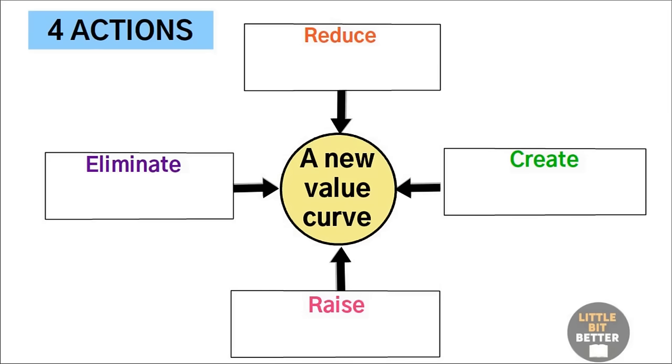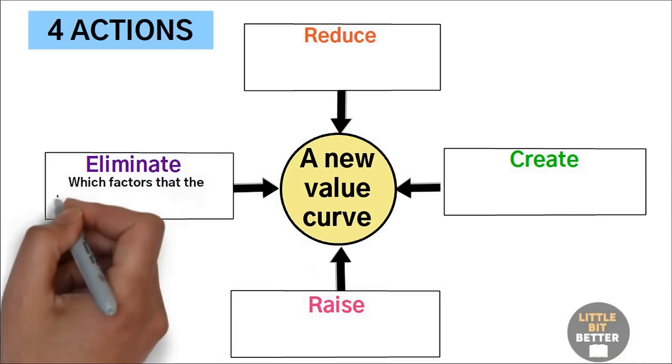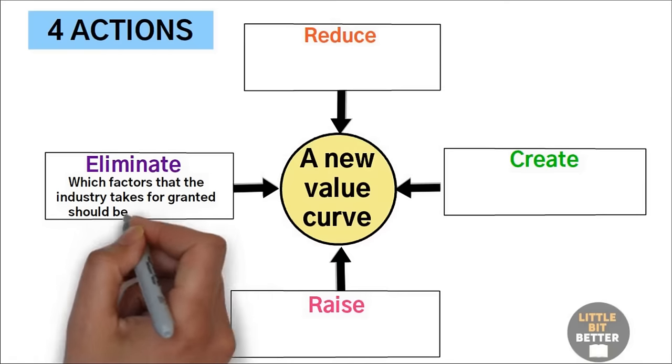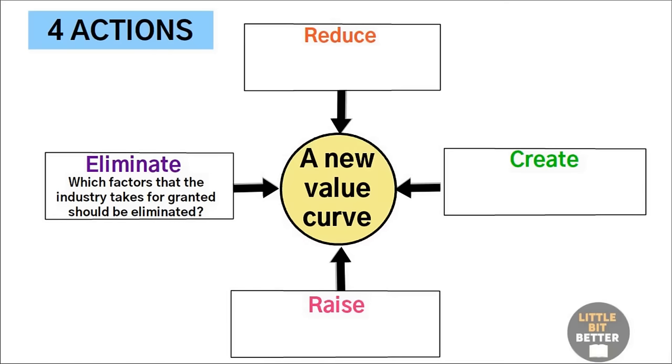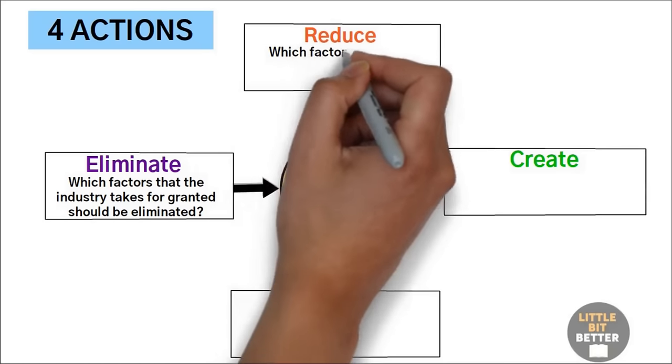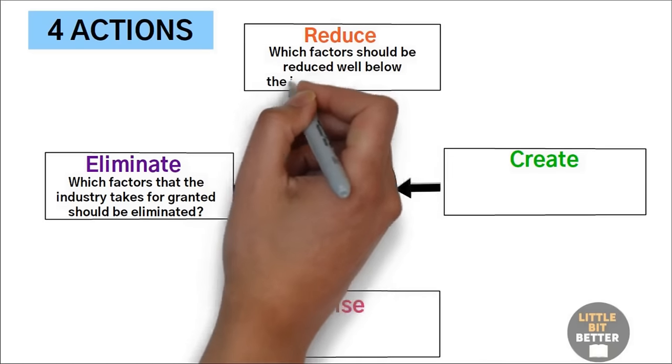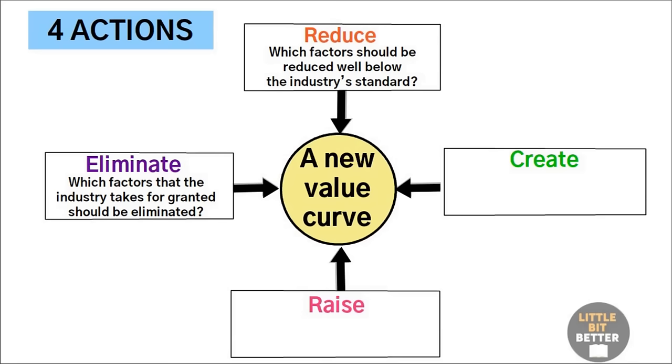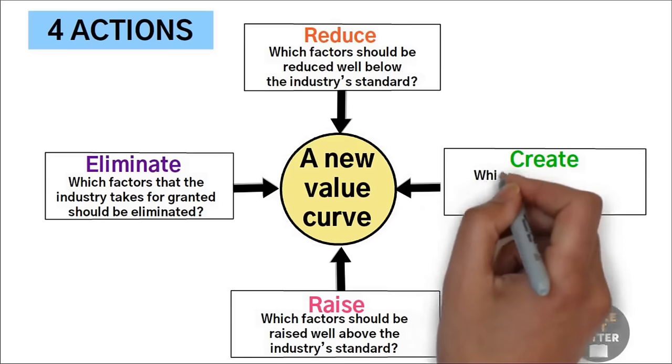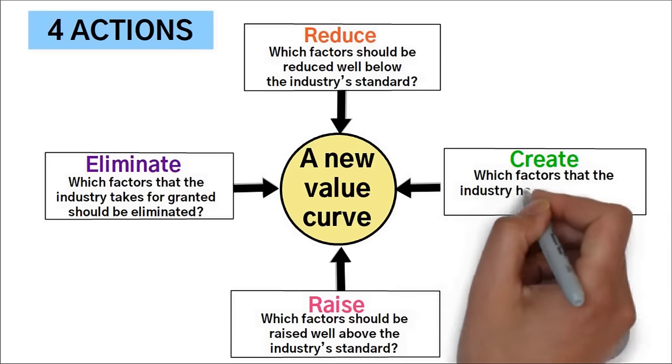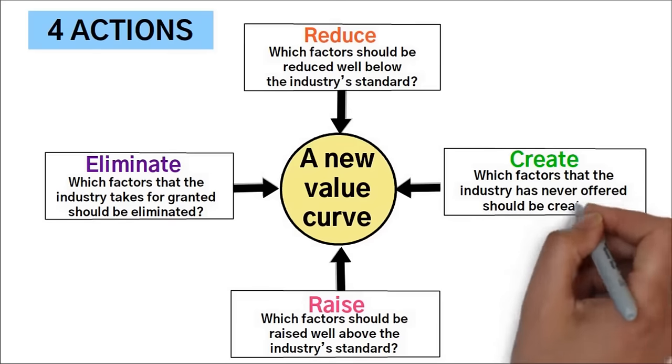Number one, Eliminate. Which factors that the industry takes for granted should be eliminated? Number two, Reduce. Which factors should be reduced well below the industry's standard? Three, Raise. Which factors should be raised well above the industry's standard? Four, Create. Which factors that the industry has never offered should be created?